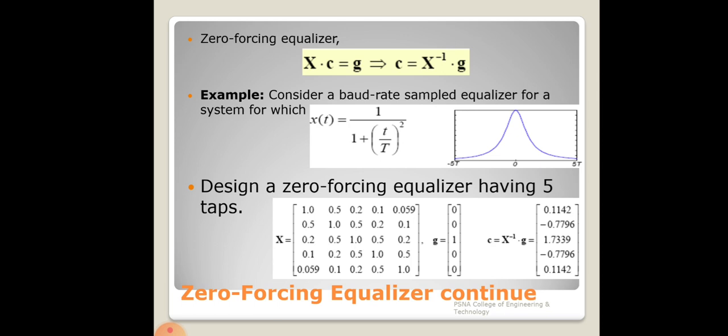In zero-forcing equalization, the equalization process compensates for ISI effects by using an inverse filter as the channel impulse response. The filter coefficient design is most important. The conventional methods are the zero-forcing equalizer (ZFE) and the least mean square (LMS) method, both of which are important for equalization.